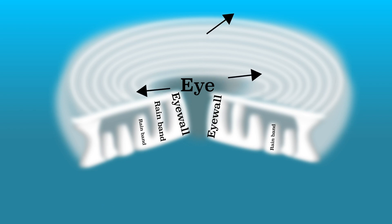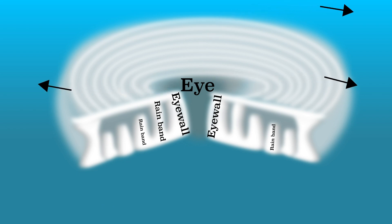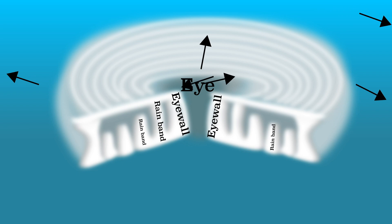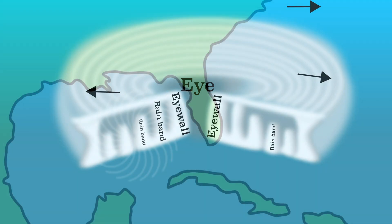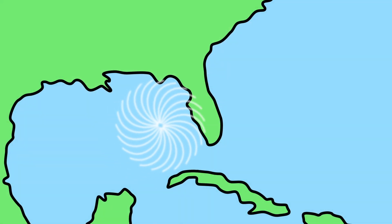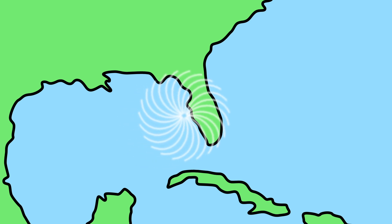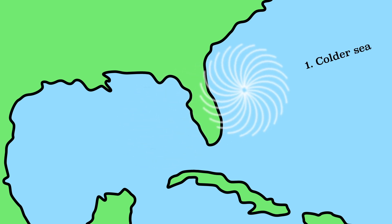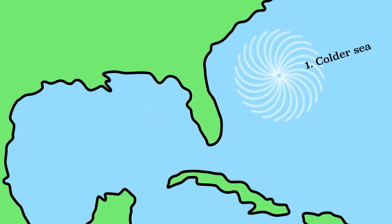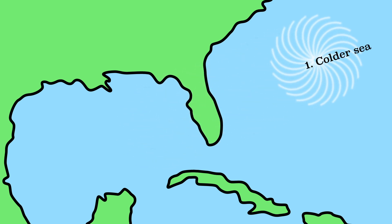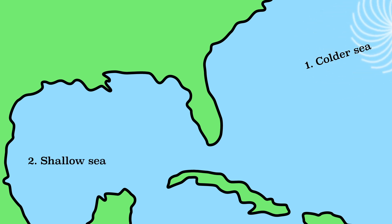Once the rising air is higher in the atmosphere, it moves back out to the right, similar to the movement of a high pressure area. As the hurricane moves to other areas, the hurricane may decrease in strength. As the hurricane moves to colder seas, the hurricane lacks the energy it needs. Even a shallower sea can ensure that colder seawater is drawn to the surface, causing the hurricane to cease to exist.